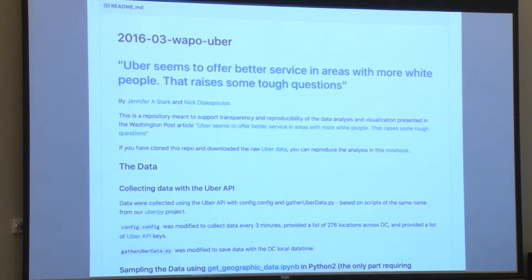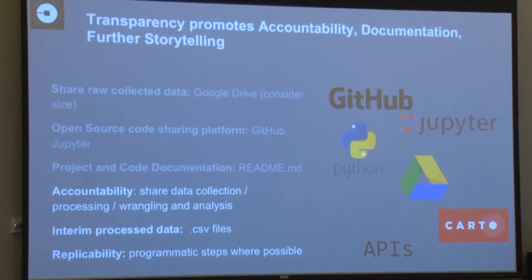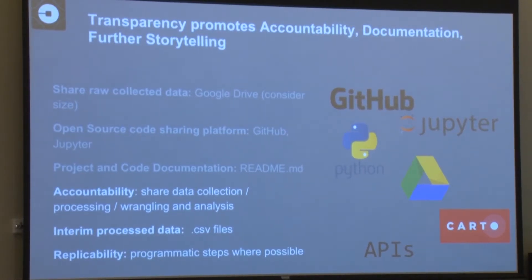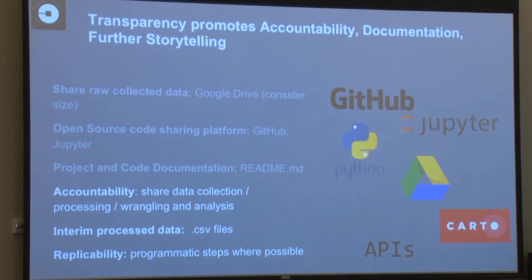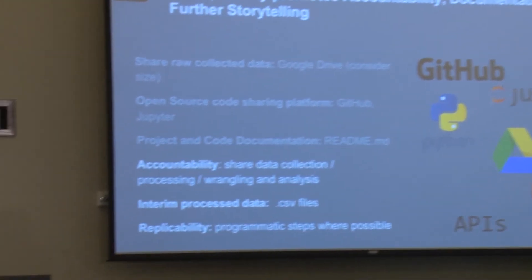We included interim process data because if somebody wants to use your project, they might not necessarily want to run it from the very beginning — they might want to pick up the project from a certain point. It's important to save interim process data in CSV files, which are easily accessible by anybody. Also, if possible, try to do every step in a programmatic fashion to minimize mistakes when you do it again yourself or if people want to replicate your study. That's not always possible — some of the maps we did were in CartoDB, which you can't code. Sometimes with APIs, it might be better to put links within the readme to their own documentation rather than redoing it yourself. We also had a Twitter bot that retweets comments from articles in response to people tweeting the link to the article itself.